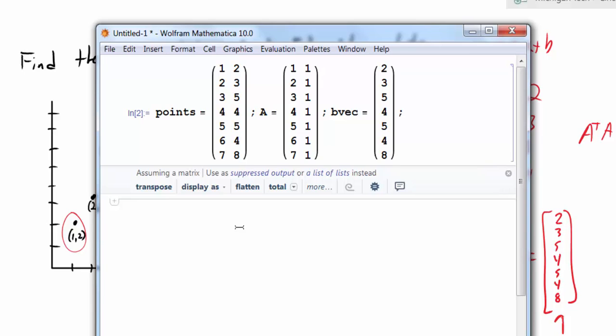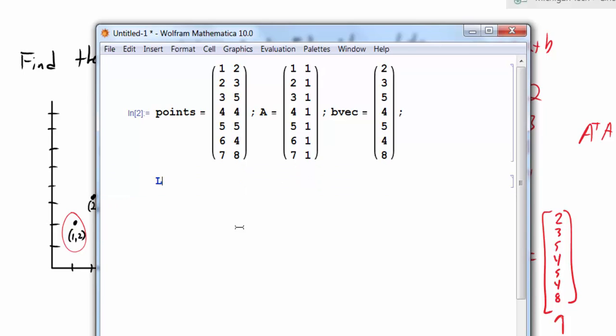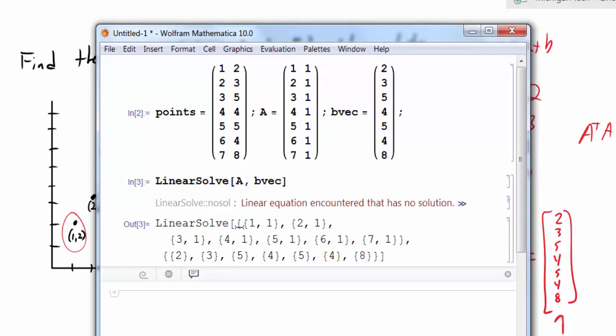And so I could go ahead and try to solve the system. On Mathematica, I have a pre-built command called linear solve. So I will use linear solve. And normally for linear solve, I just put in a matrix and the right hand side. Now notice, if I try to solve this system, it says no, you can't do it. There are no solutions. Well, we already talked about that. We know there isn't a line that actually goes through all the points.